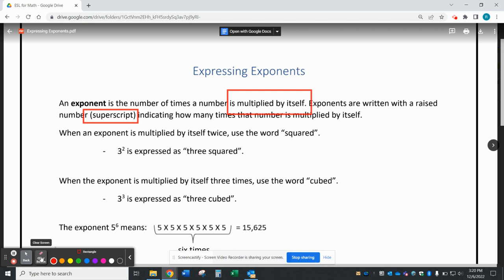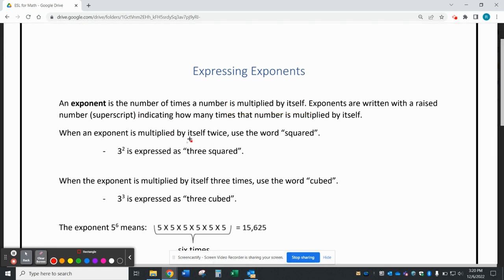We have a couple of words that we use when exponents are multiplied by themselves twice, and that English word is squared. So in this case, we would express 3 with the exponent of 2 as 3 squared.